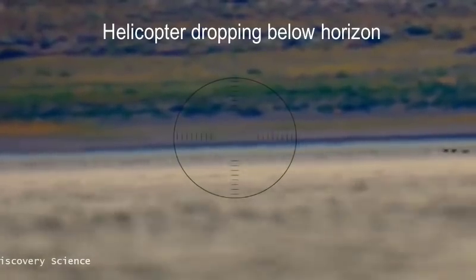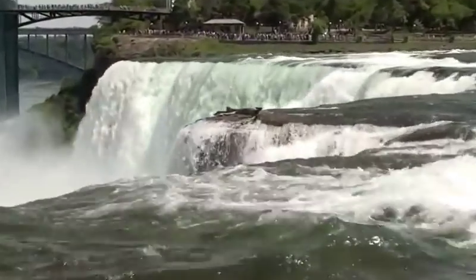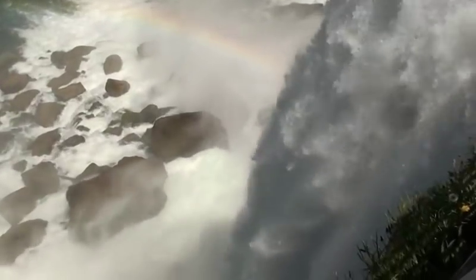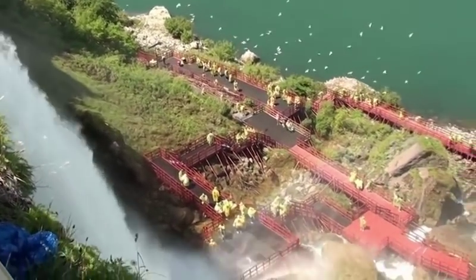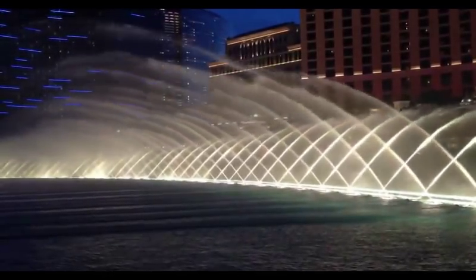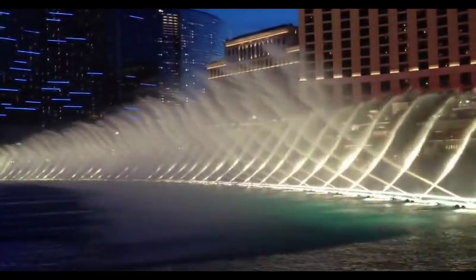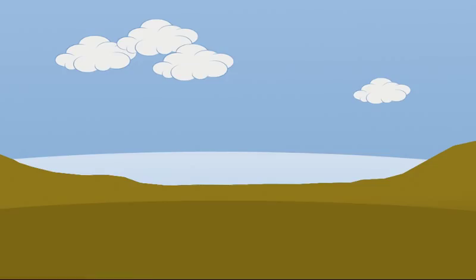Flat earthers sometimes say gravity cannot bend water, but that is absurd — of course it can. What do they think bends water at the crest of a waterfall or at the top of a fountain? Of course it is gravity. Water reacts to forces — it will always flow to the lowest point it can. When squirted up, water will always curve back down to earth. These effects are obviously caused by gravity. It is gravity that causes water to find its level, but that level is perpendicular to the force of gravity, and since the direction of gravity is toward the center of the earth, water naturally curves with the earth.